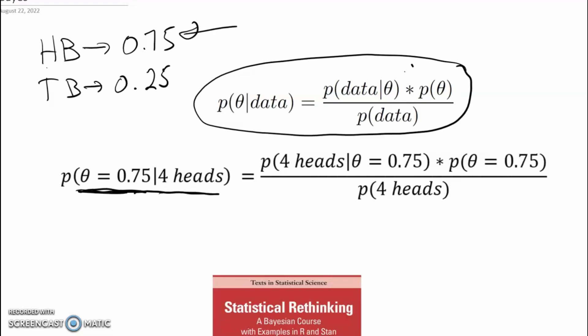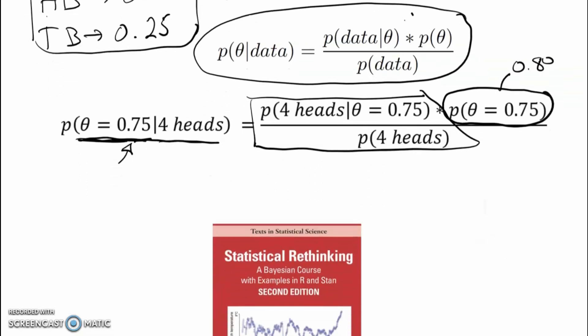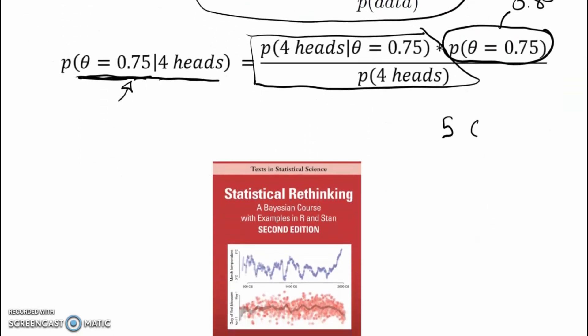I could calculate the posterior probability of having a head bias coin by taking my prior probability of 0.80, then considering the data — captured by this part of the equation — and multiplying those together gave me the posterior probability. That's a nice introduction to Bayes theorem, but it's a bit limited. It only had two alternatives, two possible values of theta: 0.75 and 0.25. Now what I want to do is expand that and consider five possible values of theta.